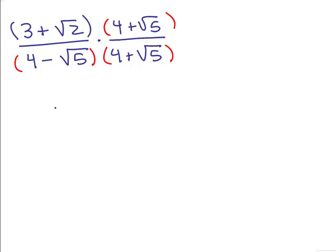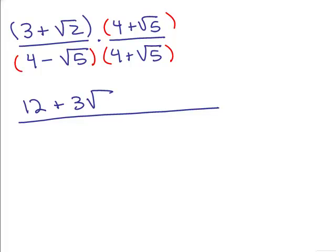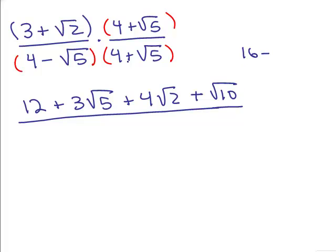In the numerator I'm going to have 4 terms using FOIL. 3 times 4 is 12. The outer term: 3 times square root of 5 is 3 square roots of 5. The inner term: 4 square roots of 2. The last term: square root of 2 times square root of 5 is square root of 10. For the bottom, it's a squared minus b squared: 4 times 4 is 16 minus square root of 5 times square root of 5, which is 5. So I get 11 in the denominator.